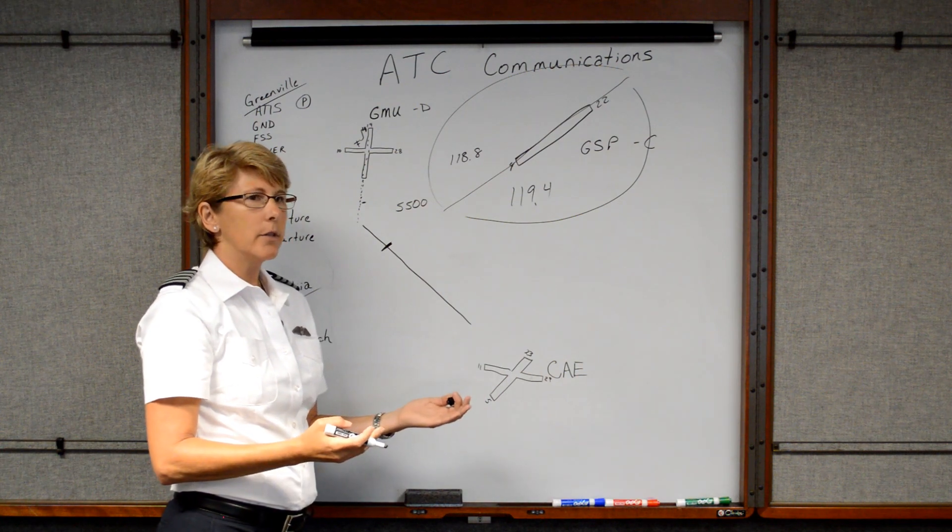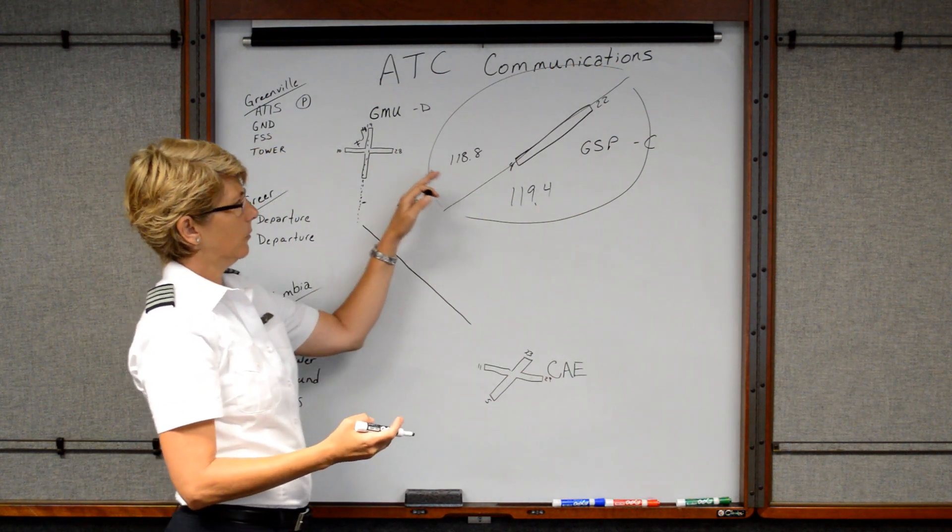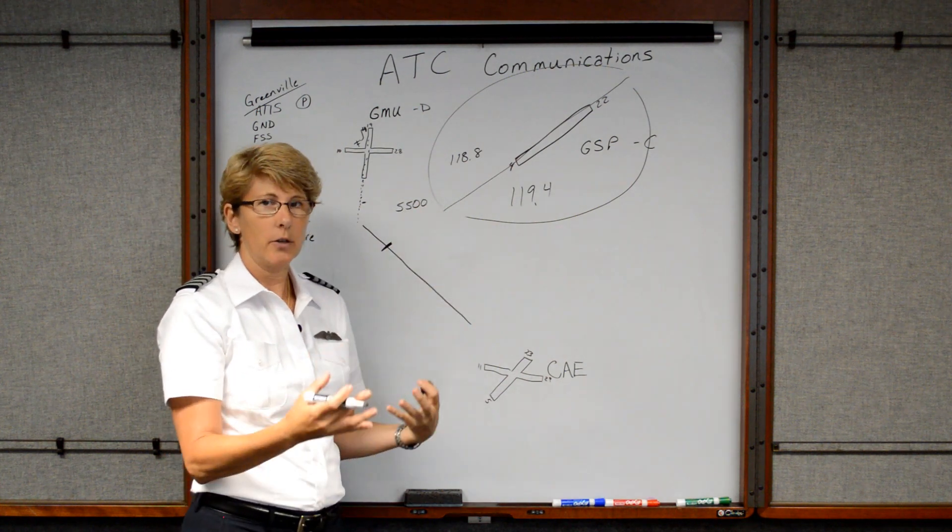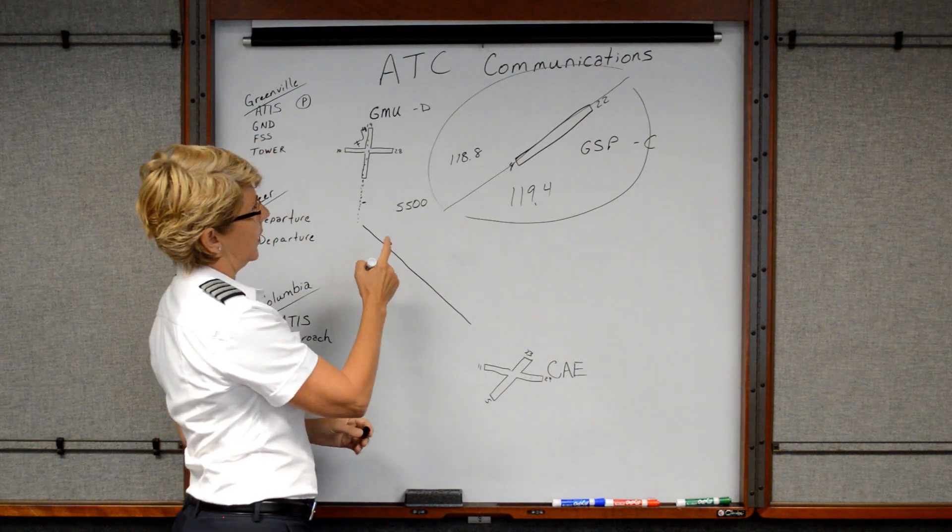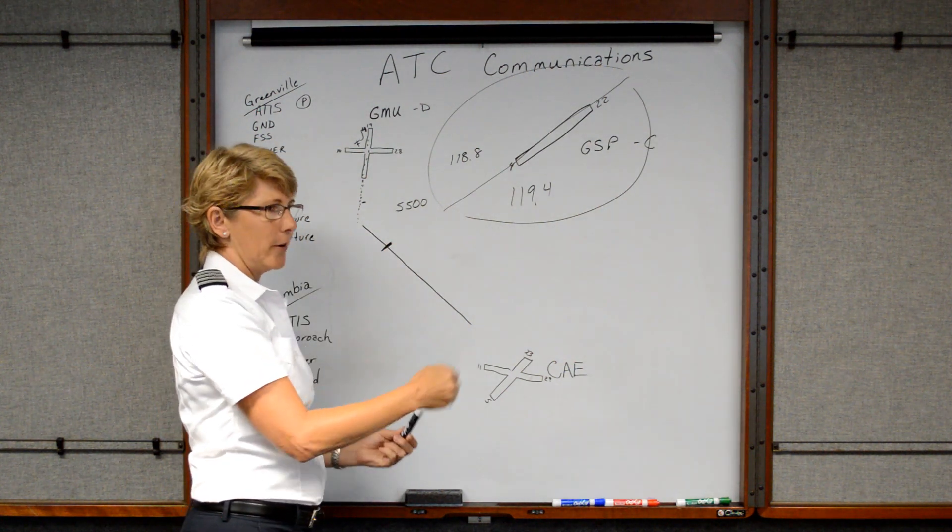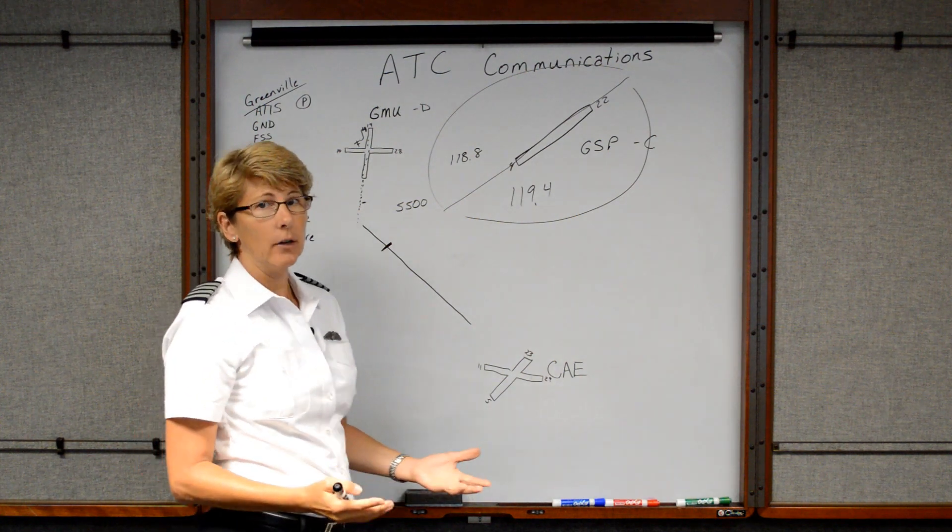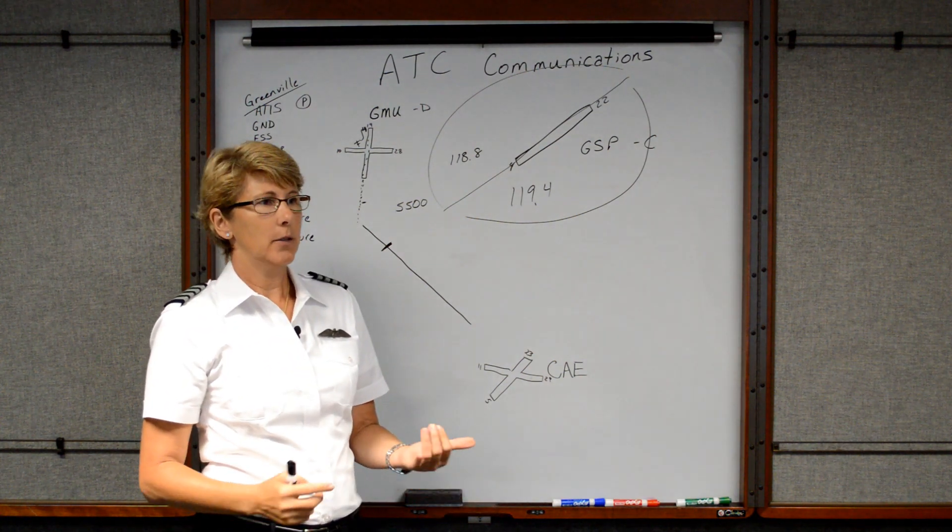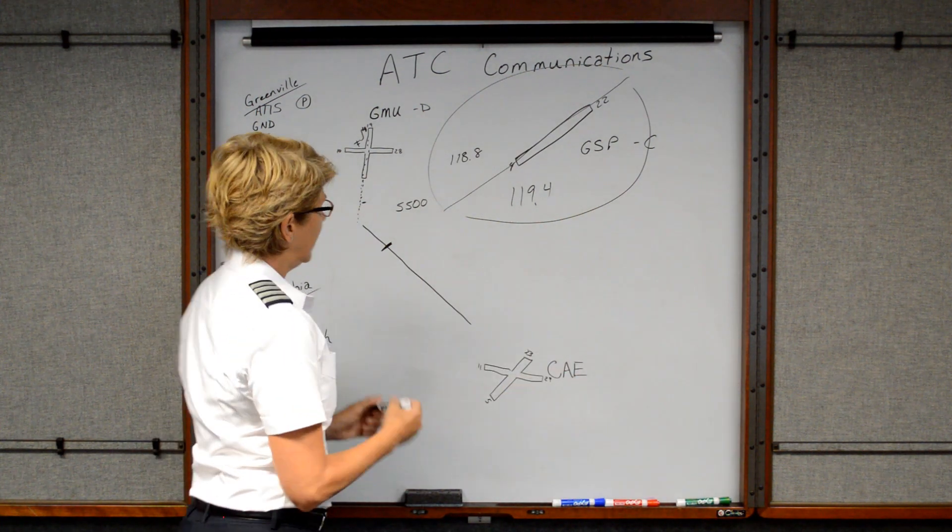And you're thinking, well, I was just on Greer departure. Why are they switching me to Greer departure? Well it's because you're flying into someone else's section or sector. So they're the ones that need to oversee you now. Okay. So don't be surprised if you switch from Greer departure to Greer departure or if you're flying in a really big area like Atlanta or Charlotte, for example, you may switch Atlanta approach six different times as you pass through the area.